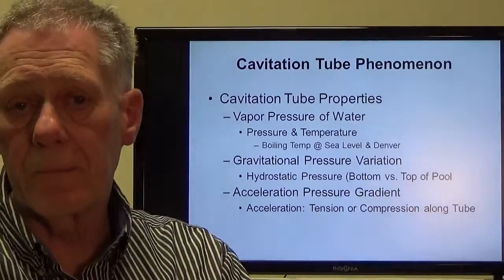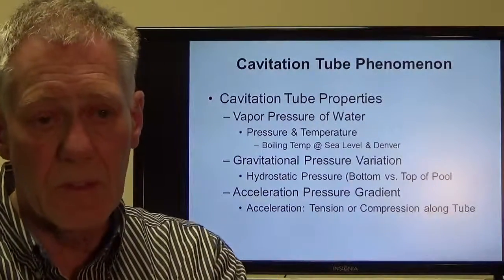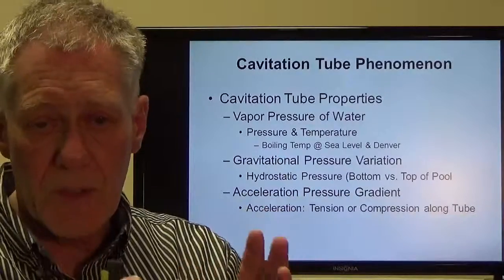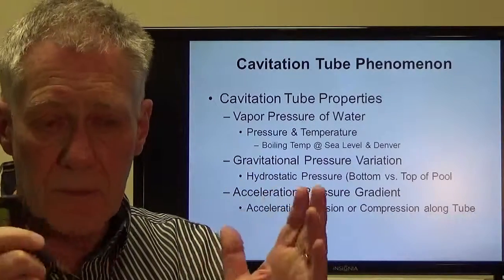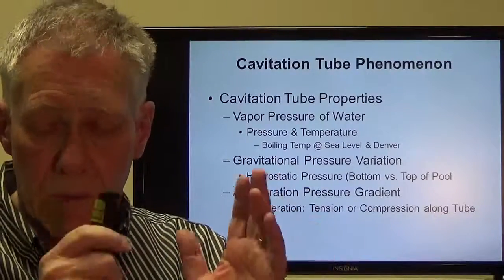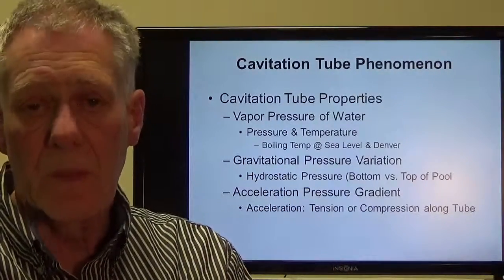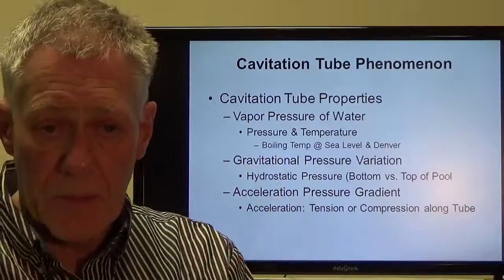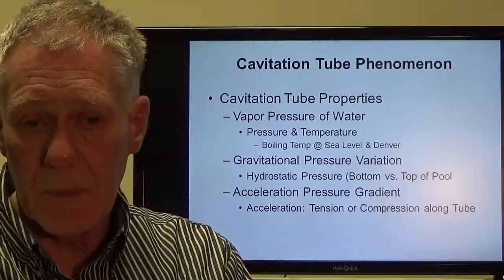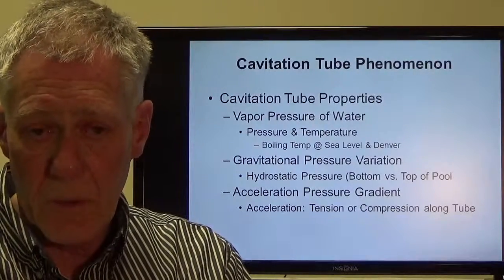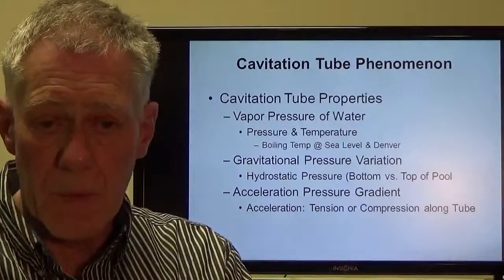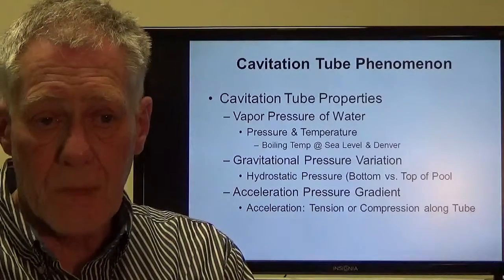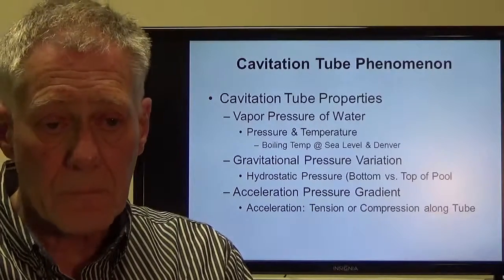So how do we explain this? There are three properties of the water involved that we have to concern ourselves with. The first is the vapor pressure of the water — the pressure at which the water will boil. It's a function of temperature. At sea level, the boiling point of pure water is 212 degrees Fahrenheit. If you go to Denver, the pressure is lower and the boiling temperature is lower. You can keep lowering the pressure and lowering the temperature until you get down to room temperature — so what is the pressure at which water would boil at room temperature?